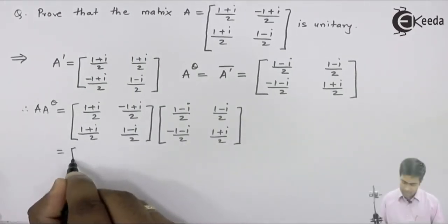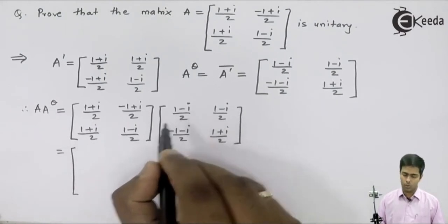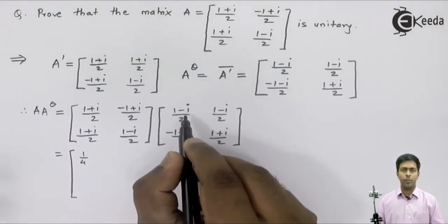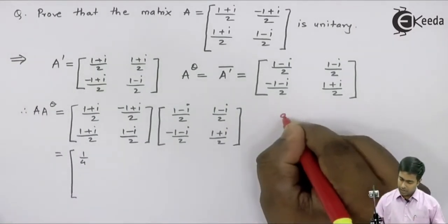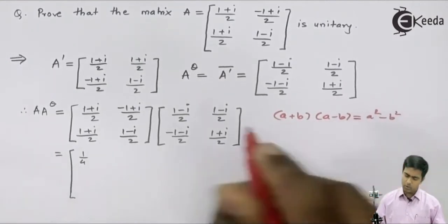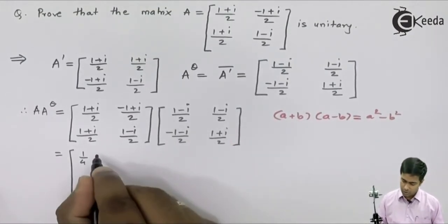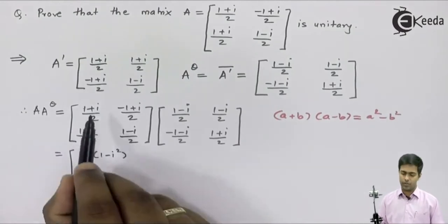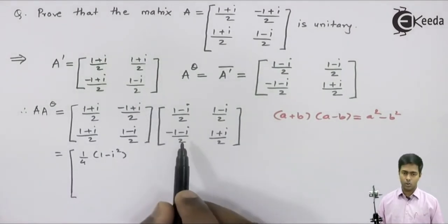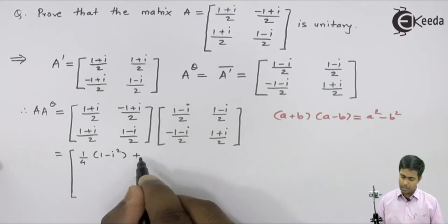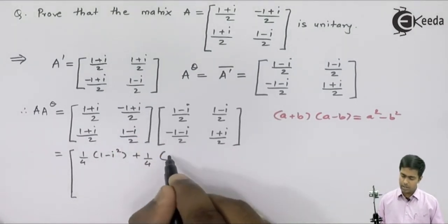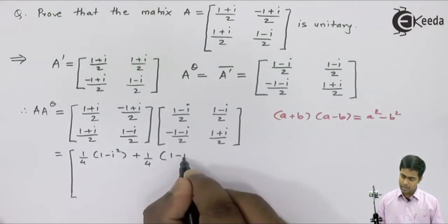Multiplying the first row with the first column: we get (1+i)/2 × (1-i)/2, so 1/2 × 1/2 = 1/4, and (1+i)(1-i). Applying the algebra formula (A+B)(A-B) = A²-B², we get 1 minus i-squared. For the second part of this element: again 1/4, and applying the same formula we get minus 1 squared, that is 1, plus i minus i, that is minus i-squared.